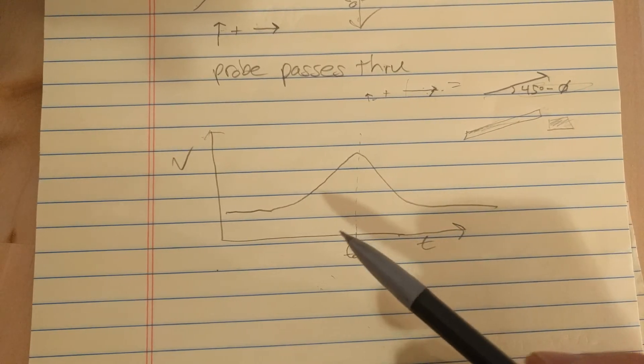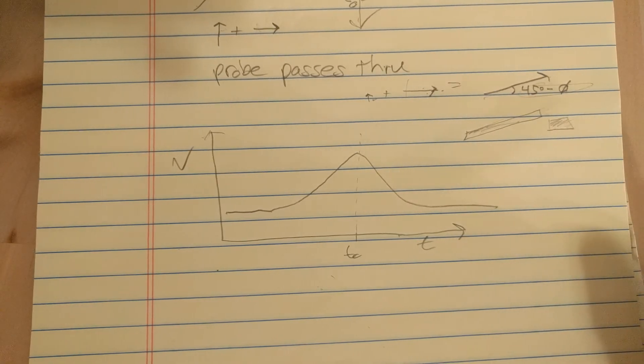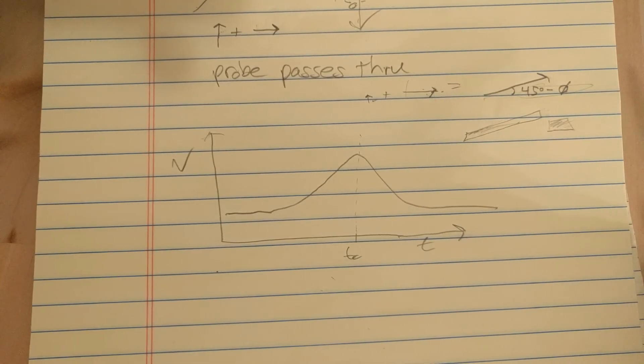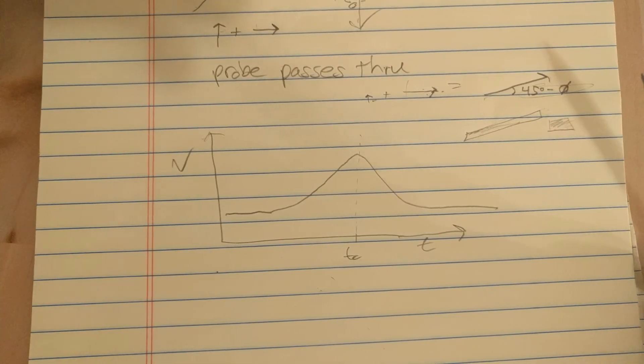So, that's how you use the Kerr effect to find timing overlap between two ultrafast pulses. Thanks for watching, and have a great day.